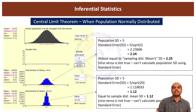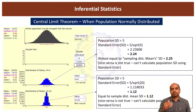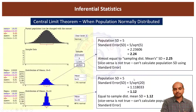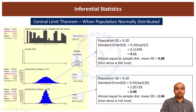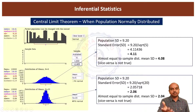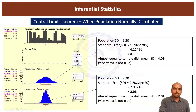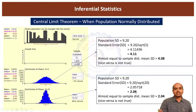When the sample size increases, the predictive power increases and the population's behavior can be predicted more accurately. When the population is not normally distributed, the same result holds: the sampling distribution of means is always normally distributed. The standard error calculated from the non-normal population's means is approximately 4.08 and 4.11 for sample size 5, and 2.04 and 2.06 for sample size 20. That is the explanation about the central limit theorem.